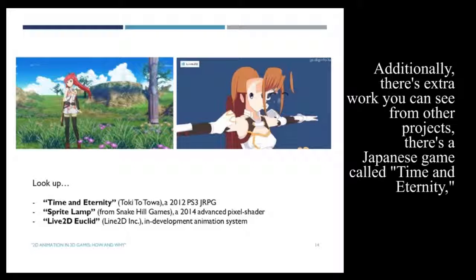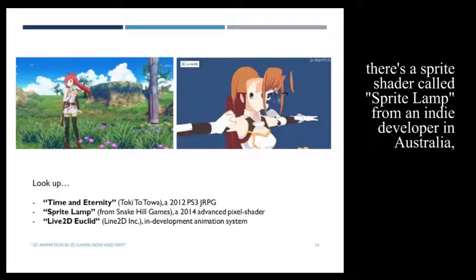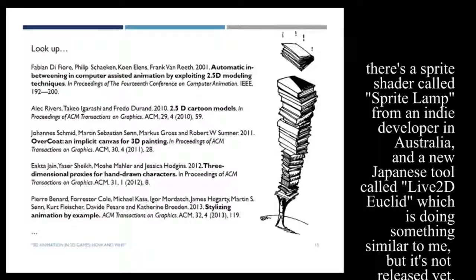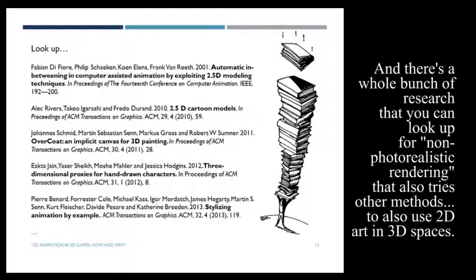Additionally, there's extra work you can see from other projects. There's a Japanese game called Time and Eternity. There's a sprite shader called Sprite Lamp from an indie developer in Australia. And there's a new Japanese tool called Live2D Euclid, which is doing something similar to me, but it's not released yet.